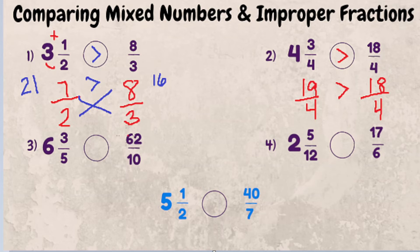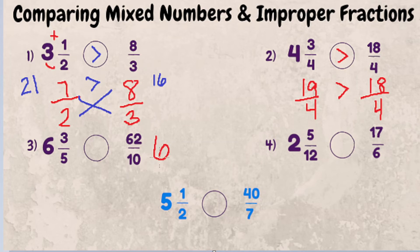The next example is six and three fifths compared to 62 tenths. What we have to do here is convert 62 tenths into a mixed number, and we do that by dividing the denominator into the numerator. Ten goes into 62 six times — ten times six is 60 — and you've got two left over, so you put those two tenths as the fractional part.